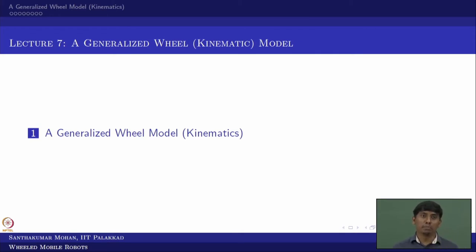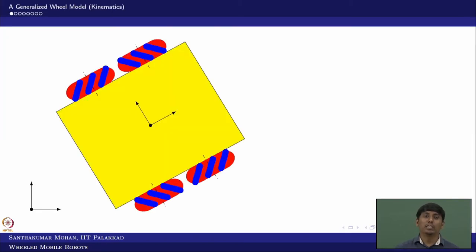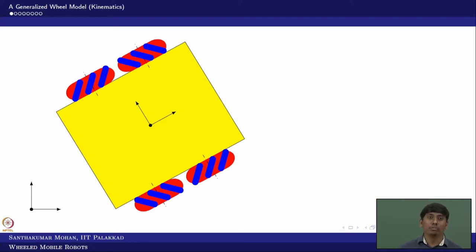There are four types of wheels we have seen in Lecture 4, where we talked about the solid wheel — both conventional and unconventional (non-conventional) wheels. I am taking a generalized wheel model using the most complex one, which is the magnum wheel. In the magnum wheel there is a passive roller which is oriented in an inclined manner — this is the complex case for which the generalized wheel model is mainly required.